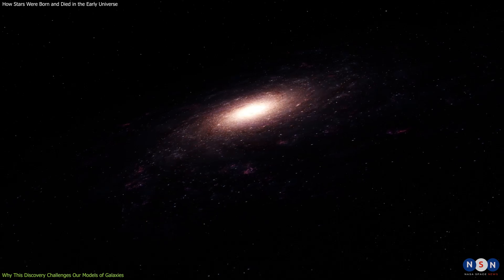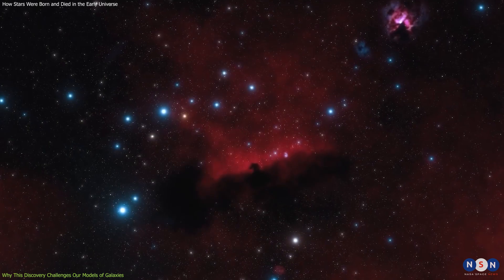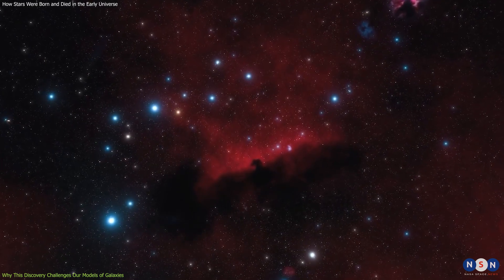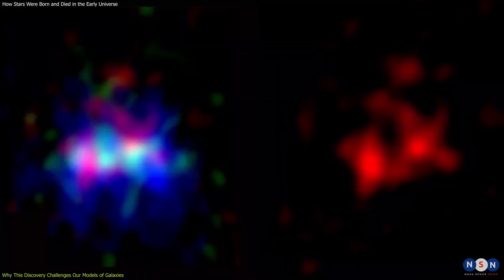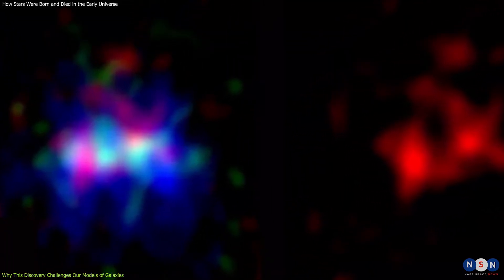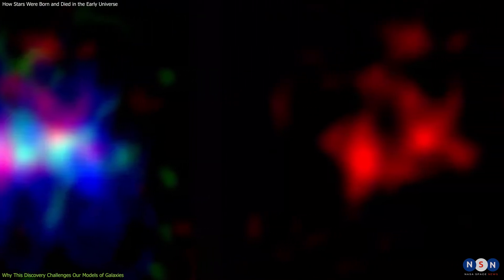We also expected that galaxies in the early universe would have more regular shapes than galaxies in the present universe because they had less interactions with other galaxies that could distort them. However, this galaxy seems to have an irregular shape, as seen by its nebula, which has different regions with different properties.